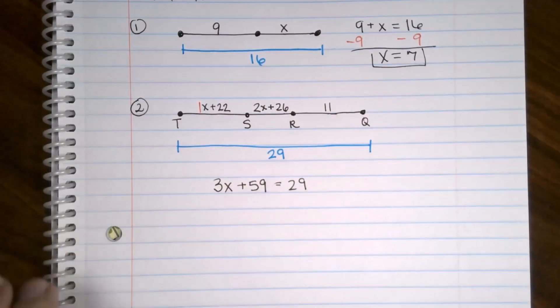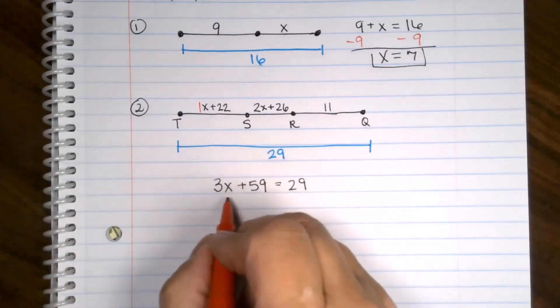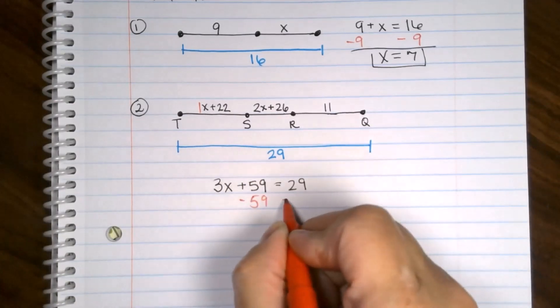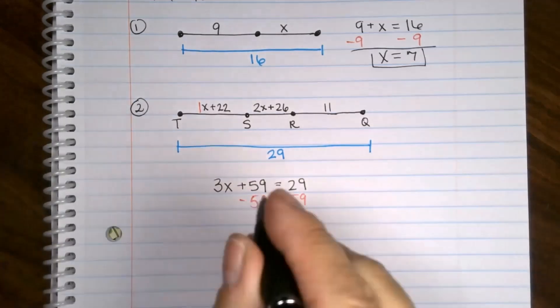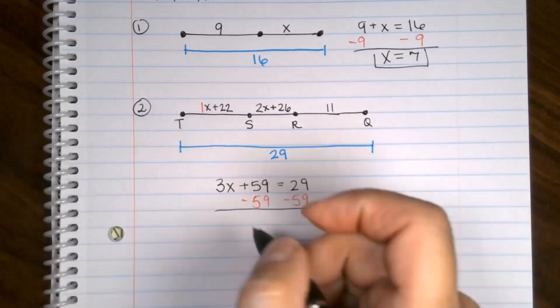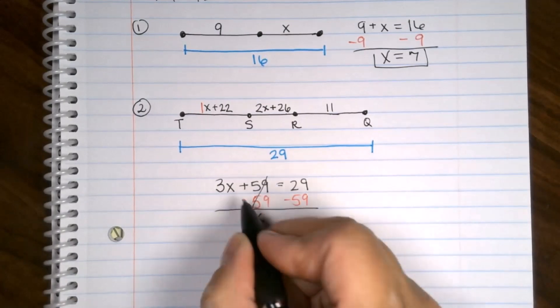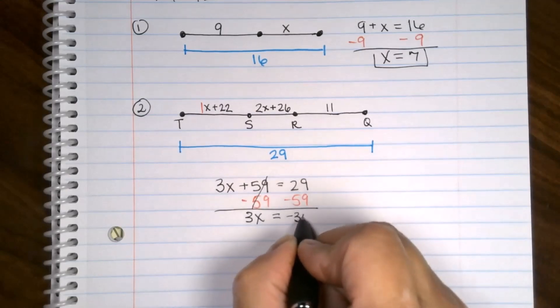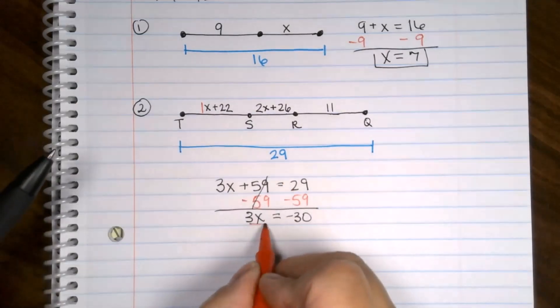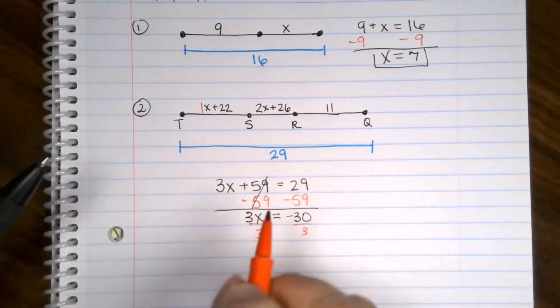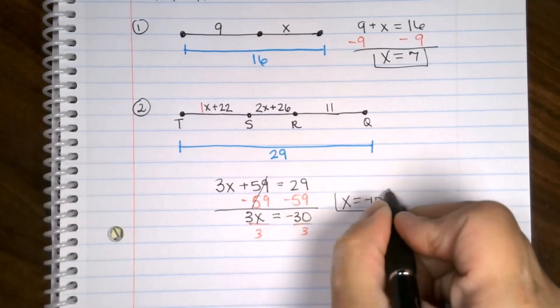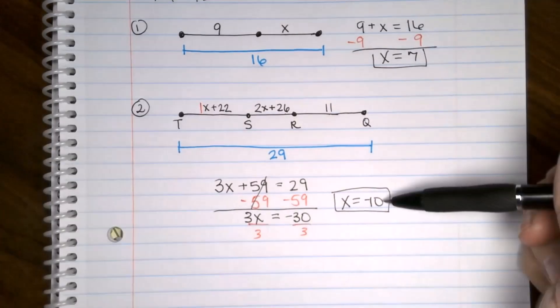All right, now we have a two-step equation to solve. We need to get the variable piece all by itself. I'm going to subtract the 59 from both sides. So that cancels. We end up with just the 3X on this side equals 29 minus 59 is a negative 30. Now you're going to divide both sides by 3. And we're coming up with X equal to negative 10. And that might be freaky for a while. But you think about it. All you need to do is plug that in and make sure your segment lengths are positive.